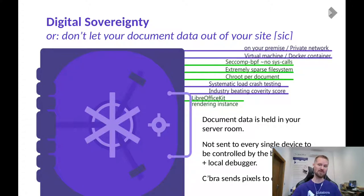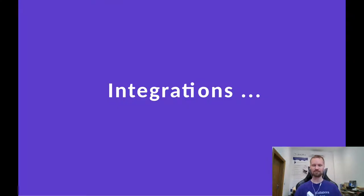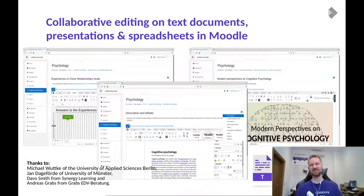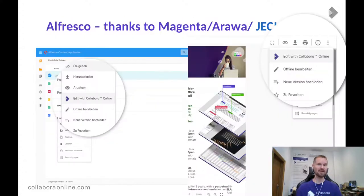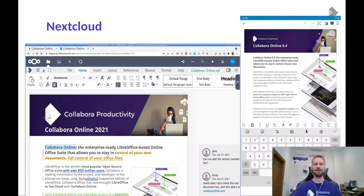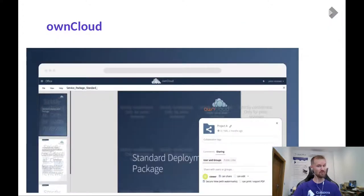We love to integrate with people. Moodle, for example — it's great to be able to share your classroom editing, allowing other people to edit documents collaboratively, or setting classroom assignments. Alfresco has some beautiful integrations, thanks to Jackie who is doing that now. eGroupware has some great stuff there. Collabora and Nextcloud are very familiar to lots of people, as is ownCloud.